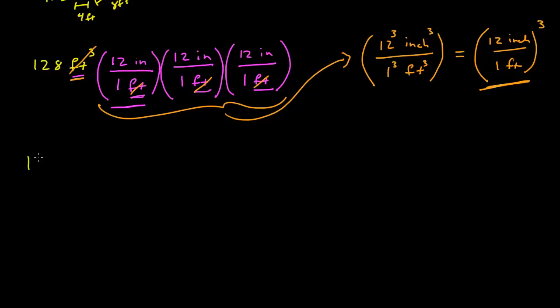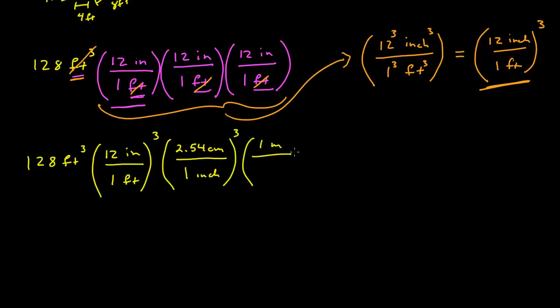now let's just do the whole thing. If I have 128 feet cubed by 12 inches over 1 foot quantity cubed, there's 2.54 centimeters in 1 inch. That has to be cubed. And then 1 meter over 100 centimeters. That's cubed.